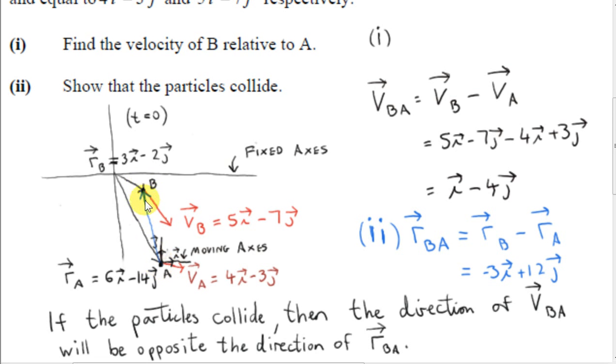So VBA, which I'll show in green, must be along the same line as vector RBA. So that's the key point for the collision of two particles. The direction of the relative velocity vector VBA will be opposite the direction of the relative position vector RBA.